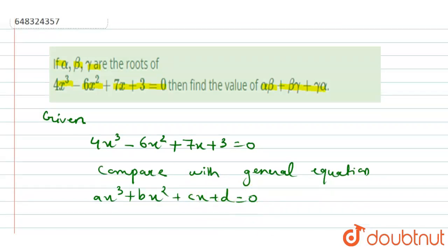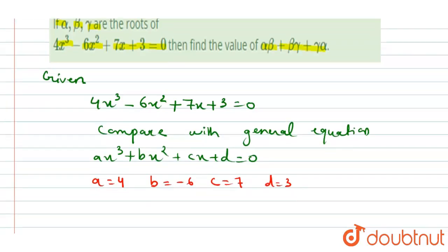By comparing, we get the coefficient values: a = 4, b = -6, c = 7, and d = 3.